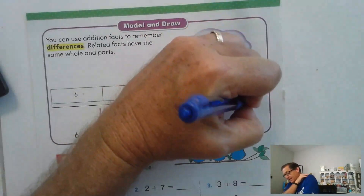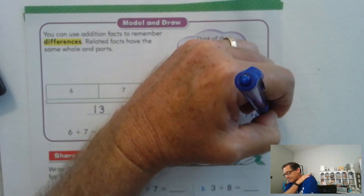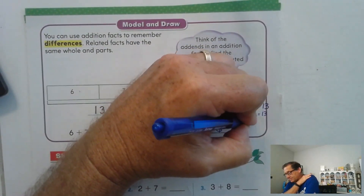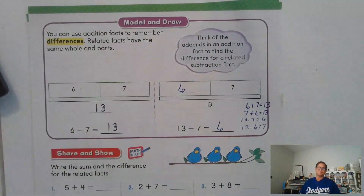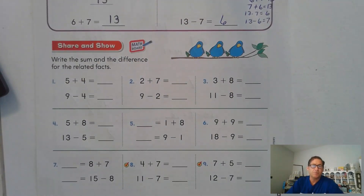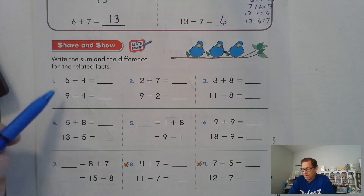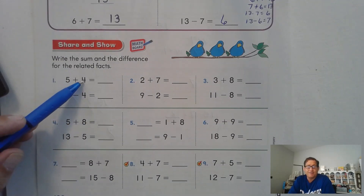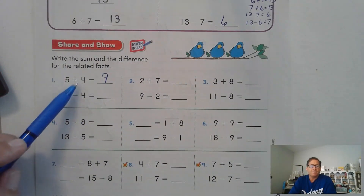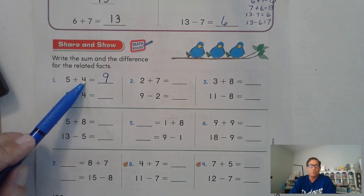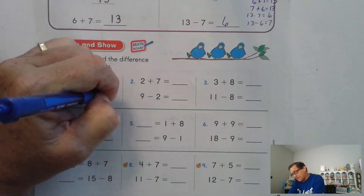If we were writing the related facts for six plus seven, we would say six plus seven is 13, or seven plus six is 13. We could also say 13 minus seven is six, or 13 minus six is seven. Now let's write the sum and the difference for the related math facts. Five plus four equals nine — if we did five plus five, that would be 10, but four is one less than five, so 10 minus one is nine. If I have nine take away four, nine minus four is five.